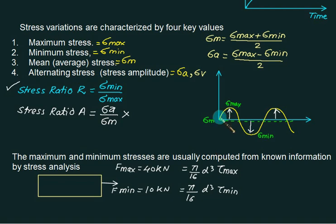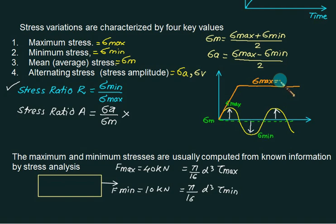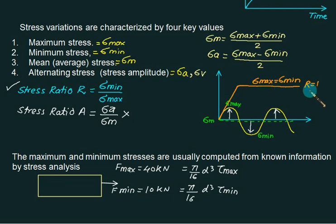I have a graph like this. You are familiar with this graph — it is of static loading. For static loading, sigma max will be the same as sigma mean because the value is not going to change. So in this problem, r is always equal to 1. For static loading, the value of r equals 1, whereas for other than r equal to 1, this value will change.